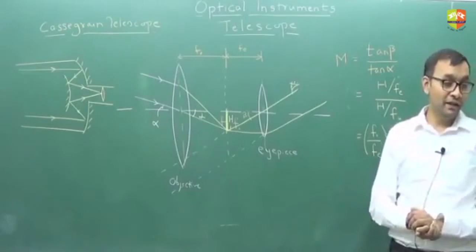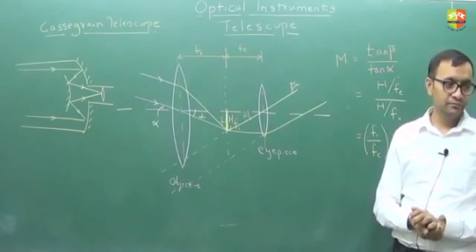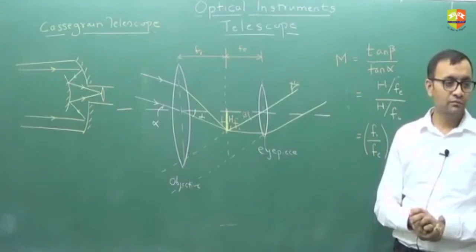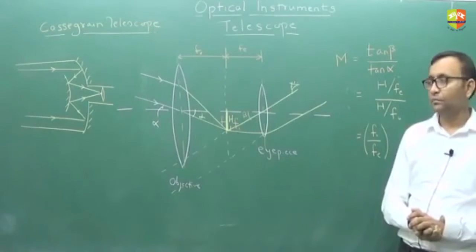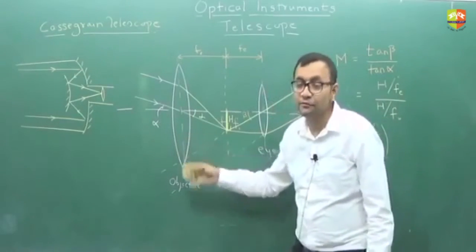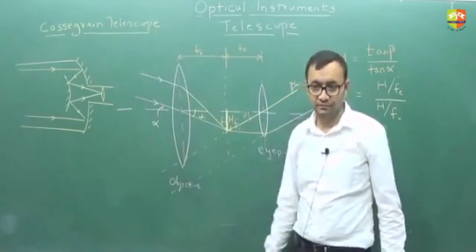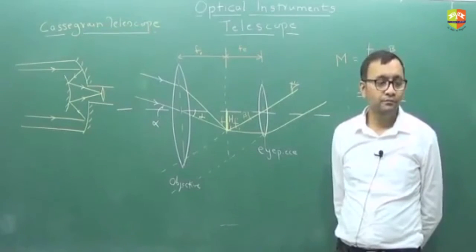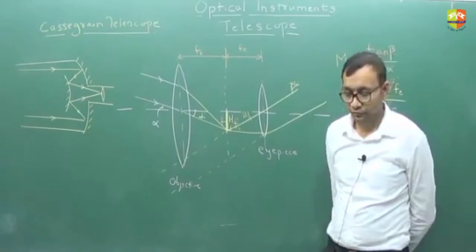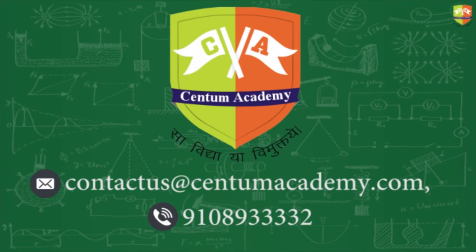We have finished the entire theory part of this chapter. After the break we will take a few numericals. A telescope with lenses becomes very heavy and difficult to deal with because the objective lenses are huge and may chip off. Let us take a small break and then we will meet.